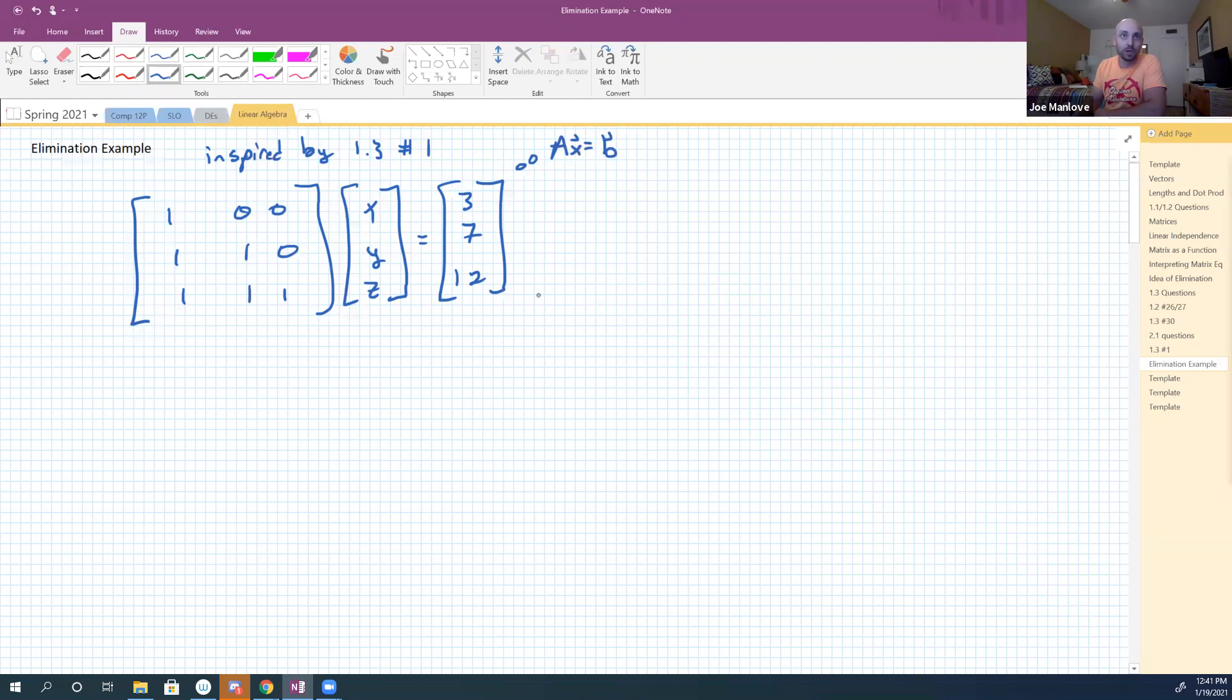It should be noted that this is a little bit of a silly example, but that's okay. So let me look at my equations here. My top equation says I have x plus zero y plus zero z equals three. My second equation says I have x plus y plus zero z equals seven. And my bottom equation says I have x plus y plus z equals 12.